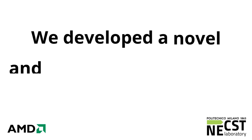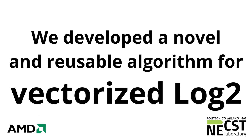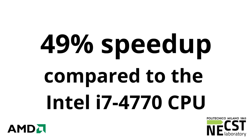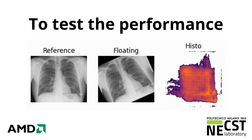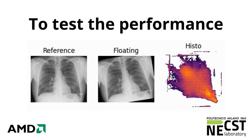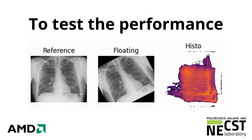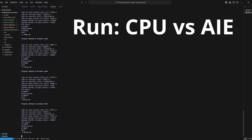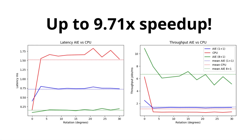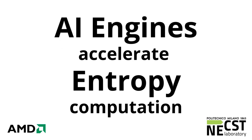To achieve this, we developed a novel and highly reusable algorithm for vectorized logarithm computation with the AI engine that offers a 49% speedup compared to the CPU with a single AI engine tile. We created different AI engine graph configurations that distribute the computation of the entropy on multiple kernels. To test the performance of our system, we created a test that simulates the progressive alignment of two real medical images. Compared to the CPU, our AI engine implementation was able to achieve a speedup of 9.71x, demonstrating that the AI engine can be used to accelerate entropy computation.